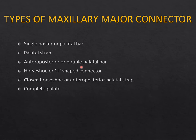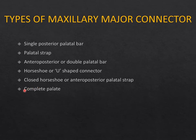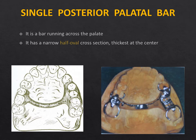The types of maxillary major connectors are: the single posterior palatal bar, the palatal strap, the anterior-posterior (double parallel) bar, the horseshoe-shaped connector, the closed horseshoe design (closed at the back), and complete palatal coverage — where cast metal covers the entire palate, similar to how acrylic covers the palate in a complete denture.